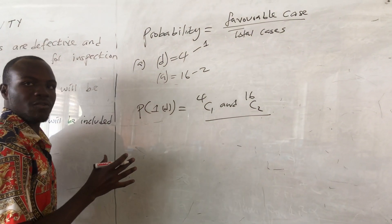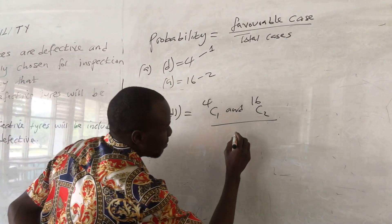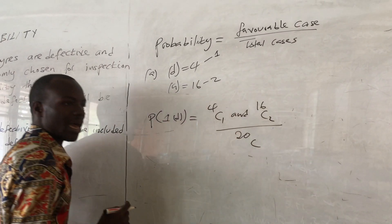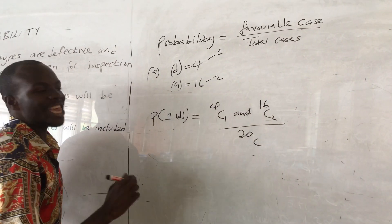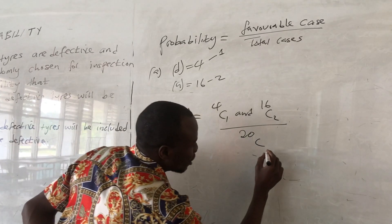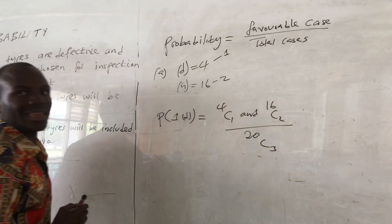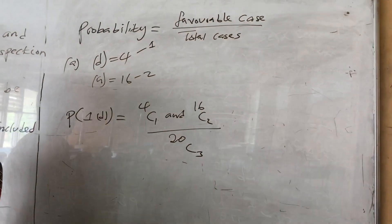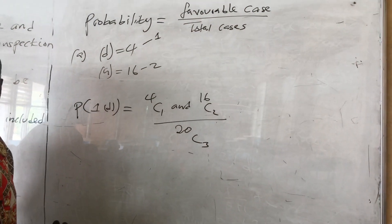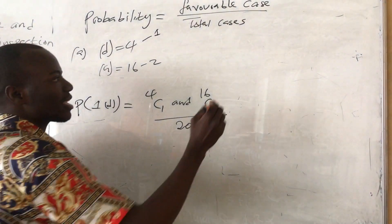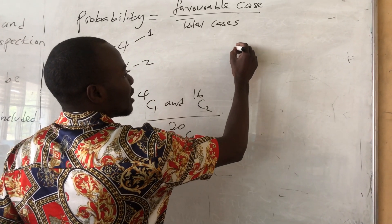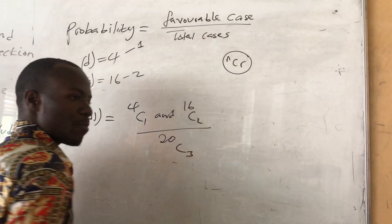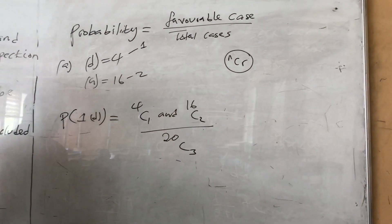The total number of tires is 20, meaning we say 20 choose 3 for the denominator. This 'choose' operation is a combination. On the calculator there is the function nCr, which is the combination function you press.